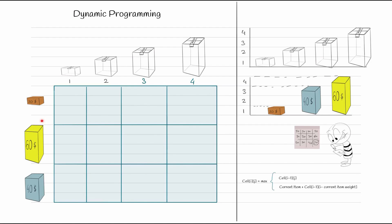We pick the first available item and fill the first row. For a box of size one, this item of size one fits, so we get its benefit. For box sizes two, three, and four, we can still only pick this same item since it's the only one available, so the benefit is the same across all columns in this first row.